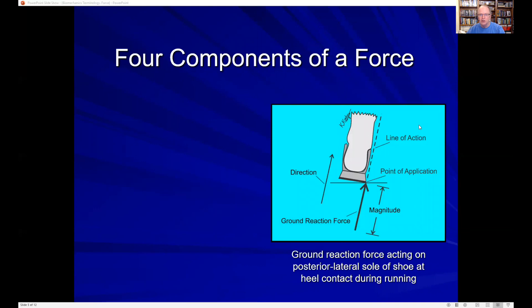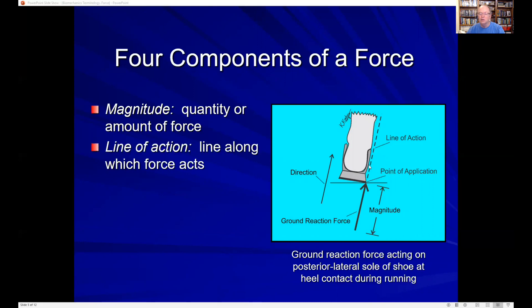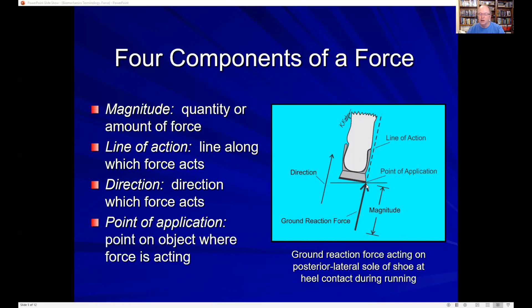There's four components of a force, and these are all important to understand how we look at this ground reaction force vector, which we often look at in podiatry. In this diagram here, I have the right foot in a running shoe striking on its heel during running with the ground reaction force vector pushing up on the posterior lateral aspect of the heel. So what are the four components? The magnitude, which is the amount of force. The line of action, which is the line along which the ground reaction force vector acts. The direction, which is either up or down this line of action. And the point of application, which in this case is the posterior lateral aspect of the shoe sole.